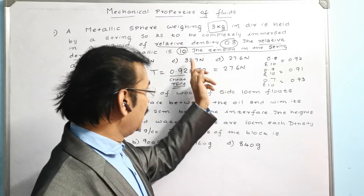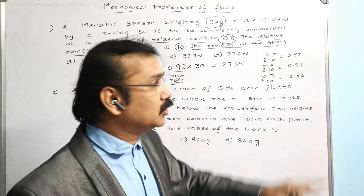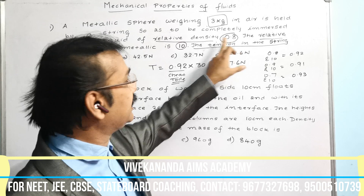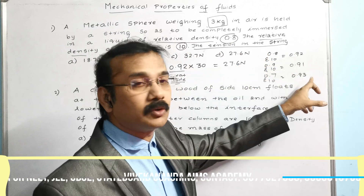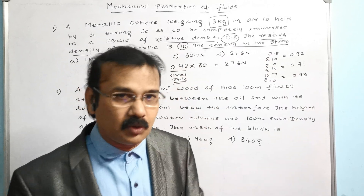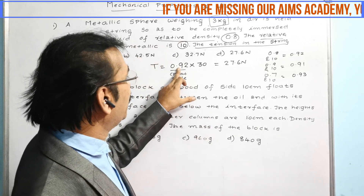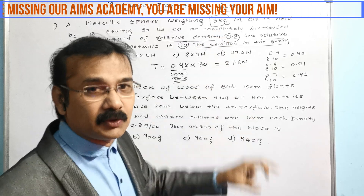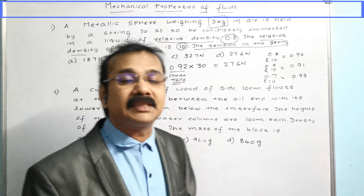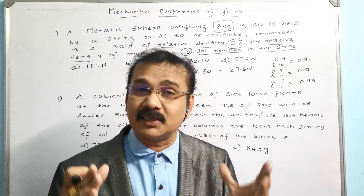Remember: the metallic relative density of 10 must remain constant to use this cheat code. If the numbers change, a different trick applies. For this model, when 10 is the metallic relative density, just multiply the cheat code by (mass × 10). For 3 kg with cheat code 0.92: 0.92 × 30 = 27.6 N — the answer is obtained in a fraction of a second.